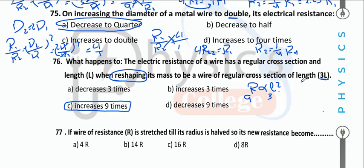A wire of resistance R is stretched until its radius is halved. R is directly proportional to r⁻⁴ when stretched, so (½)⁻⁴ = 16. The new resistance becomes 16R.